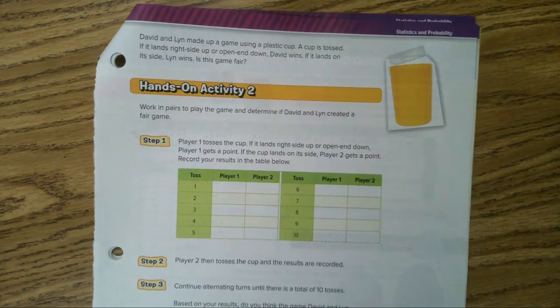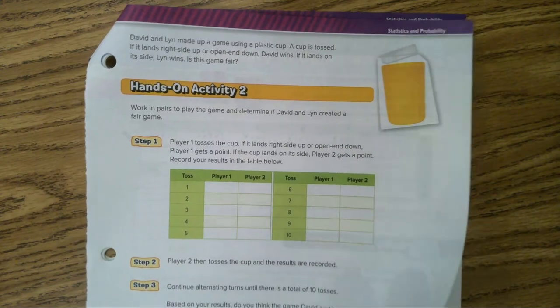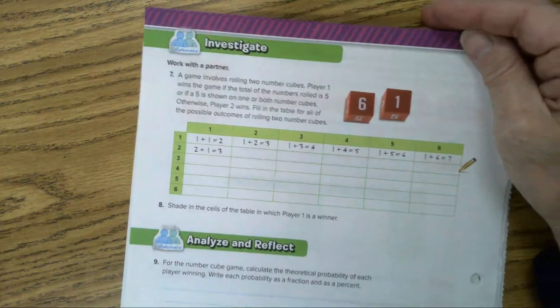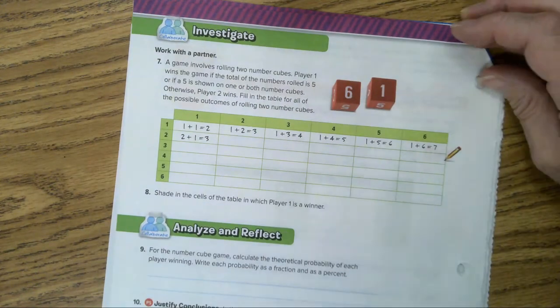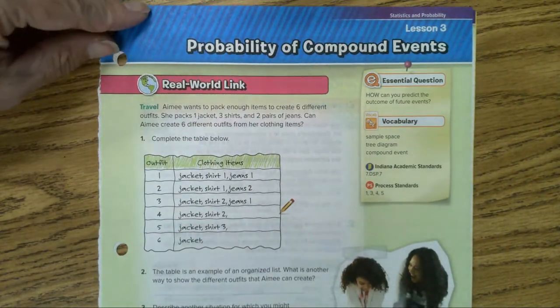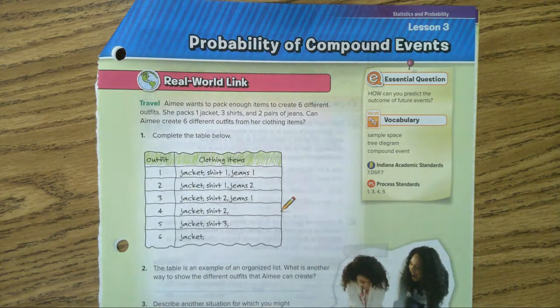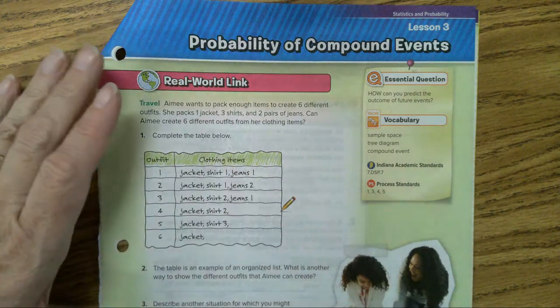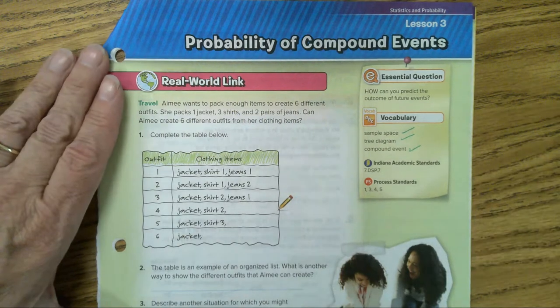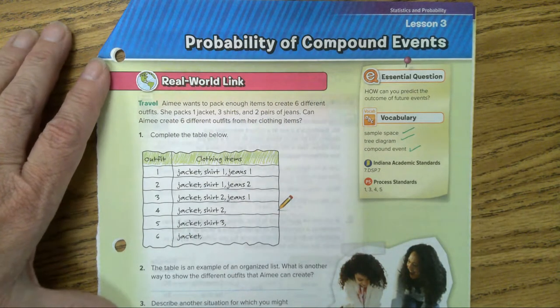A fair game is when each person has an equal chance of winning, and an unfair game is one where they don't. Now let's go on to page 733 — the probability of compound events — this is where more than one event is going to happen. Some key vocabulary words today: sample space, tree diagram, and compound event.